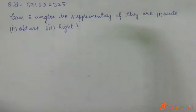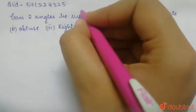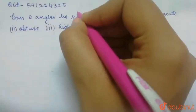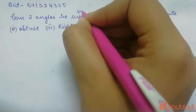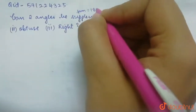Can two angles be supplementary if they are acute, obtuse and right? So now first, let's see what are supplementary angles. Supplementary angles are the angles whose sum is equal to 180 degrees.